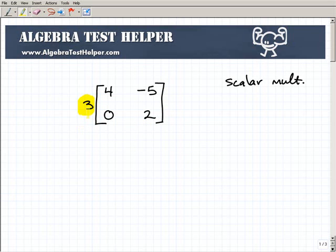And all you're going to do is take that particular number, and you're going to multiply it by the respective entries inside the matrix to write a new matrix. So really, really easy.